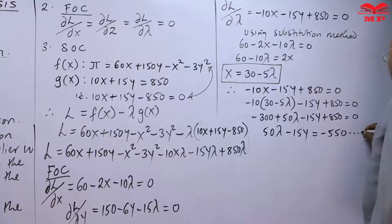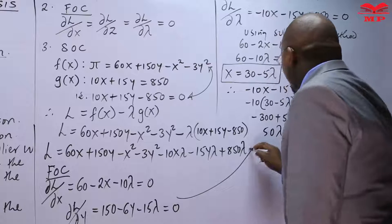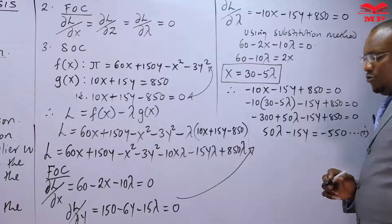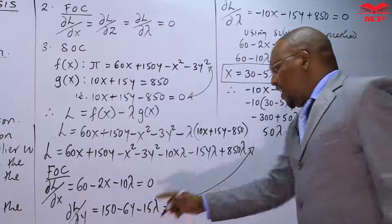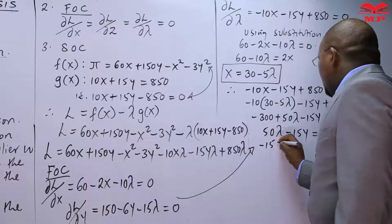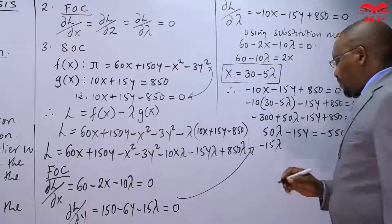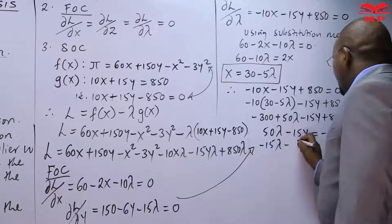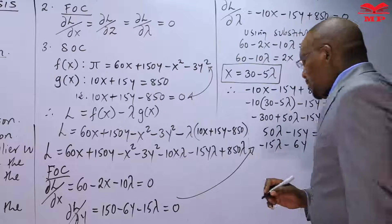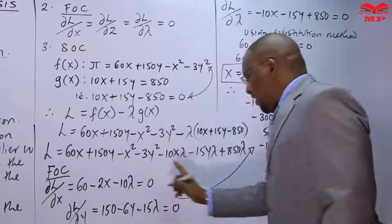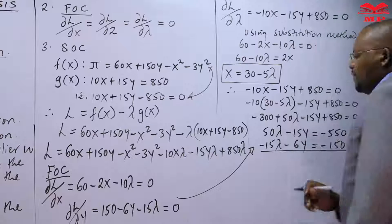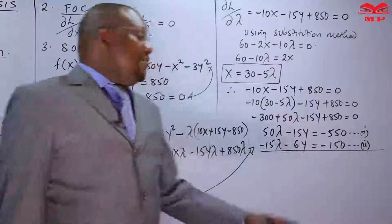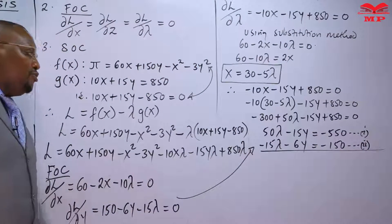From the second first-order condition, rearranging 150 − 6y − 15λ = 0 gives −15λ − 6y = −150. This is equation II. We now use the elimination method on equations I and II.